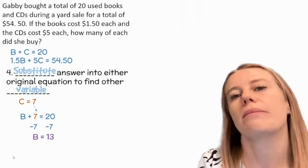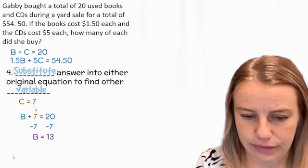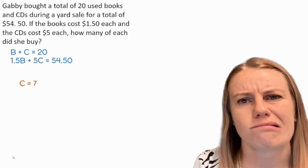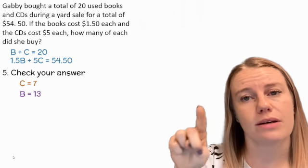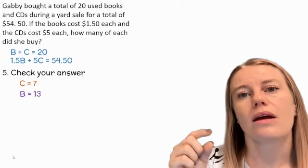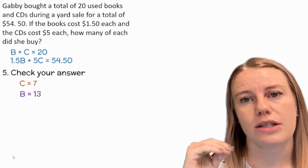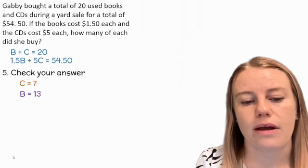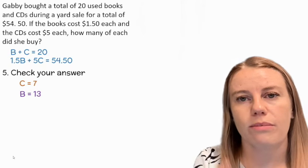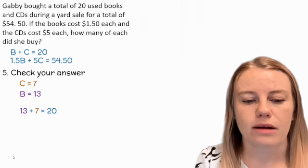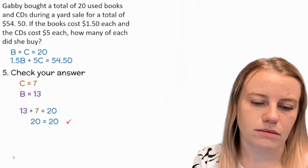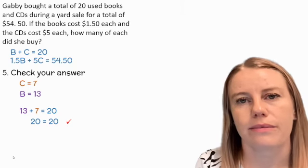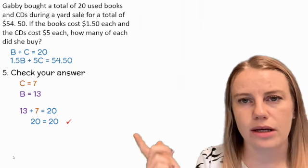What was the last most important step? Check your answer. We got C equals 7 and B equals 13. Checking my answer, I need to plug in both the C and the B into the equation I haven't used. So 13 plus 7 equals 20; 20 equals 20. Yes, that works out.